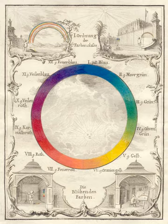In the visual arts, color theory is a body of practical guidance to color mixing and the visual effects of a specific color combination. There are also definitions of colors based on the color wheel, primary color, secondary color and tertiary color.